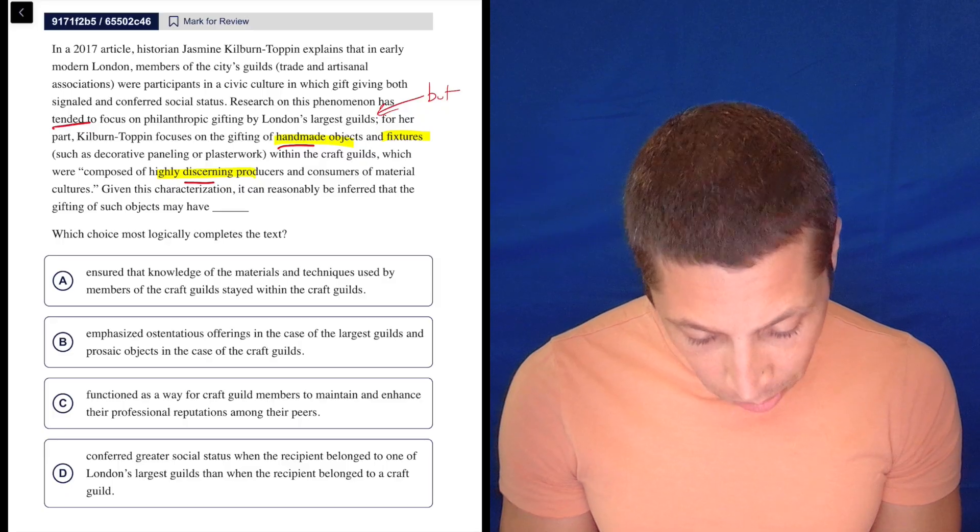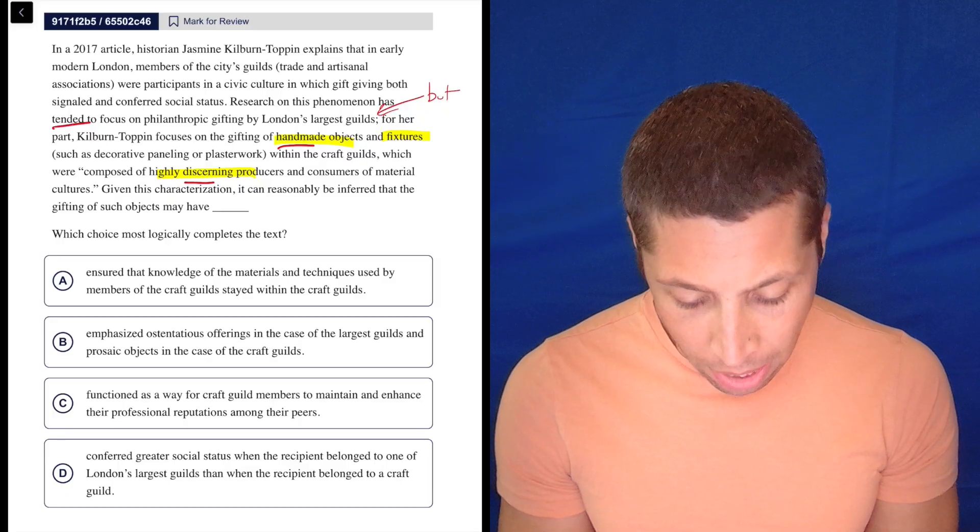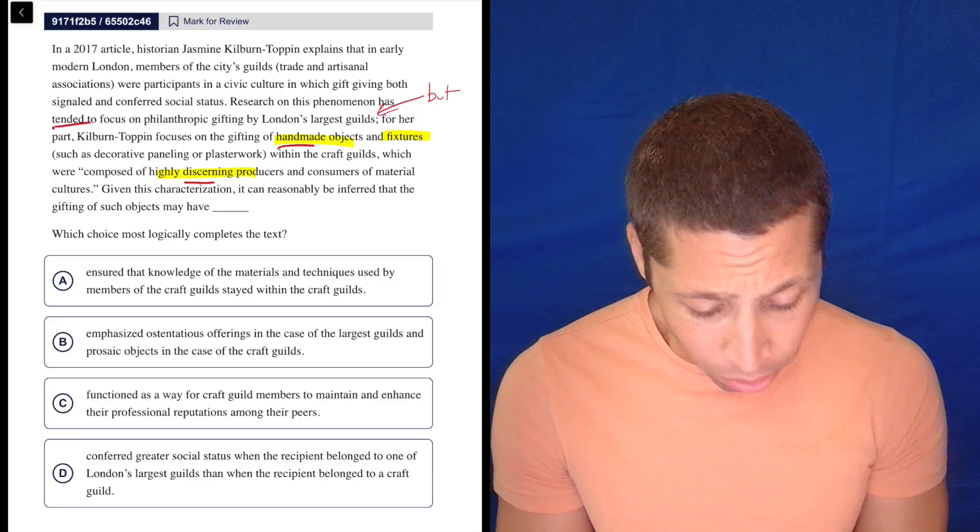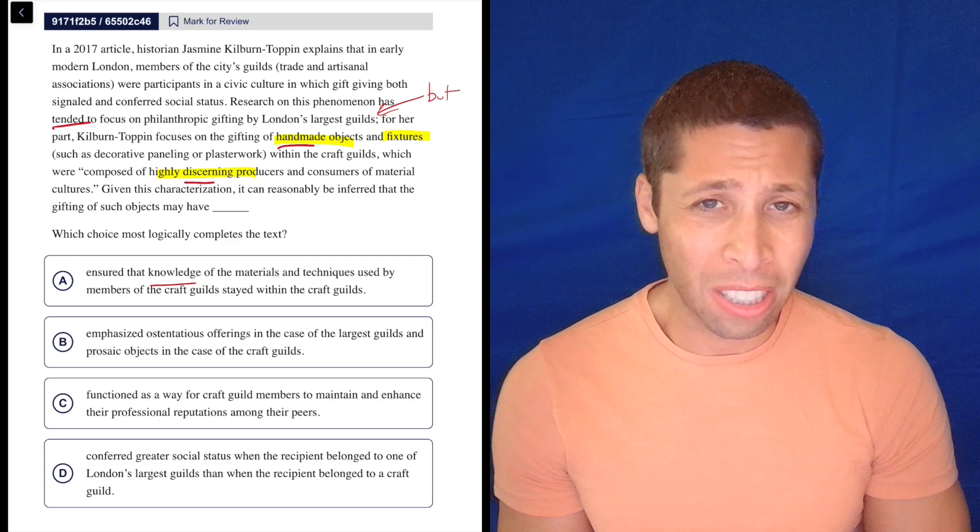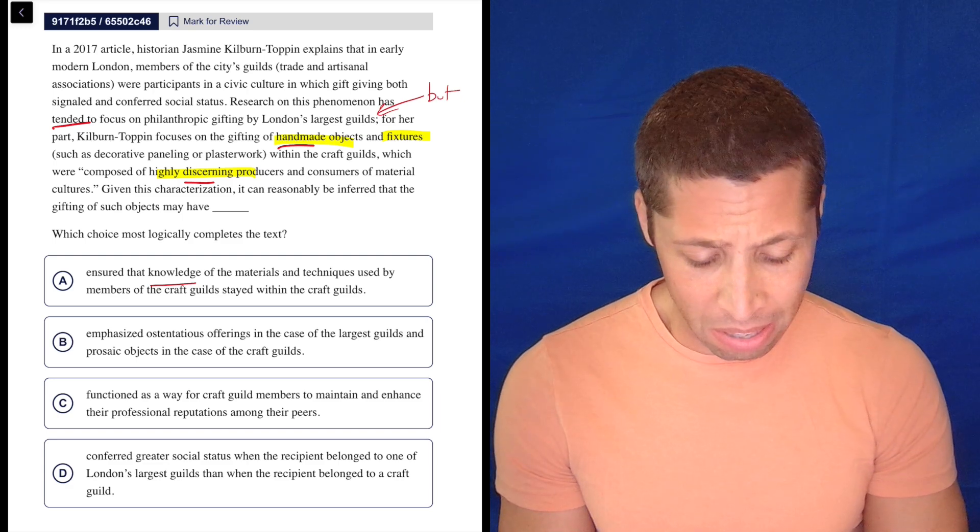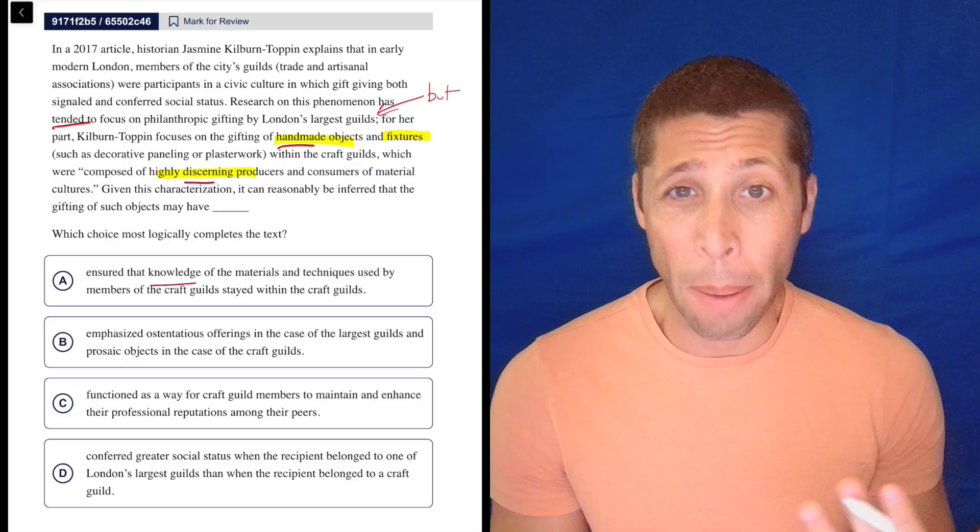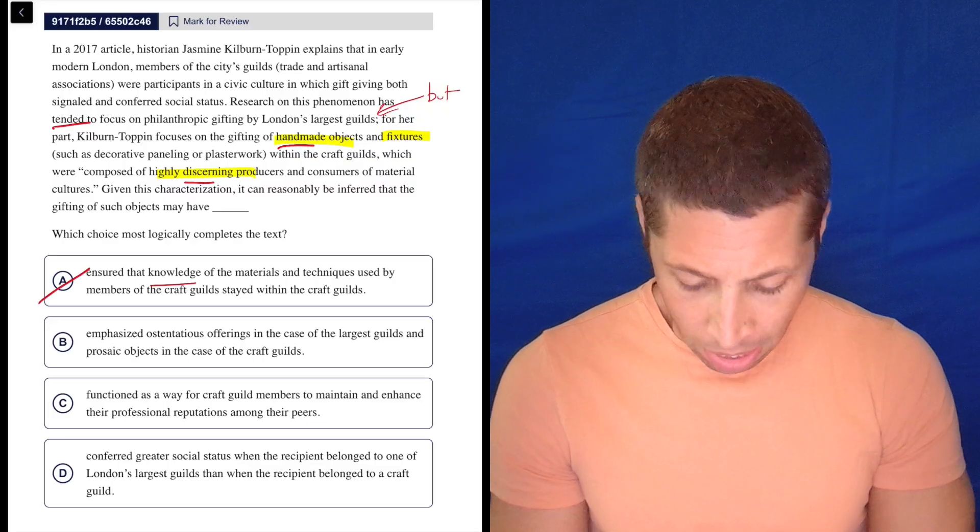Okay, so it can reasonably be inferred that the gifting of such objects may have ensured that knowledge of the materials and techniques used by members of the craft guilds stayed within the craft guilds. Well, is it about the knowledge itself? No, it seems like it's about gift giving. I don't think they're trying to keep secrets. I mean, the word secret isn't here, but that's the vibe I'm getting. That's definitely a strong word, a strong idea. This seems wrong. So B,